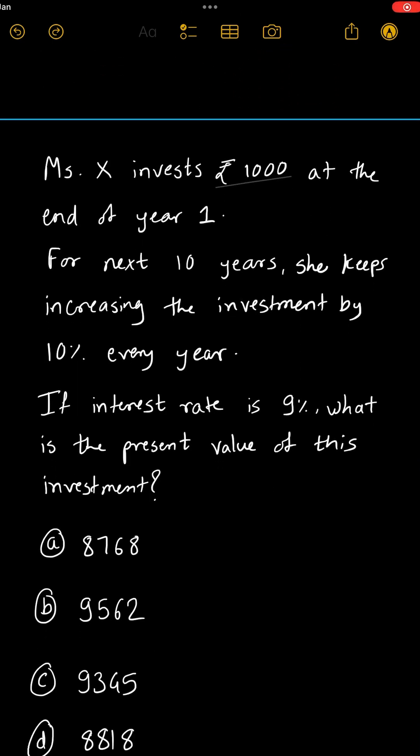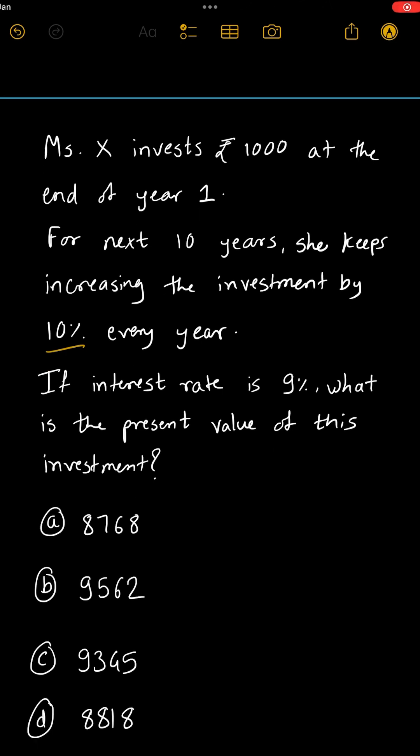Miss X invests 1000 rupees at the end of year one. For the next 10 years, she keeps increasing the investment by 10% every year. If interest rate is 9%, what is the present value of this investment? First try by yourself, then let's solve.